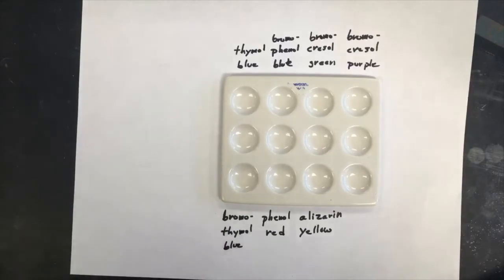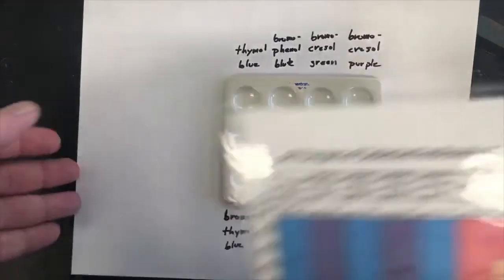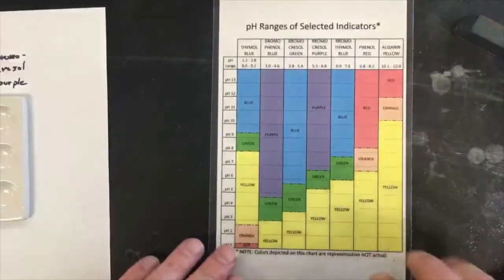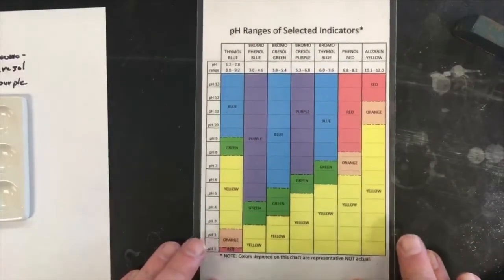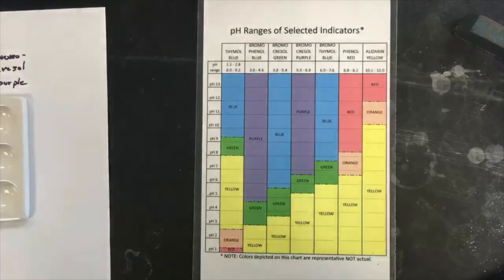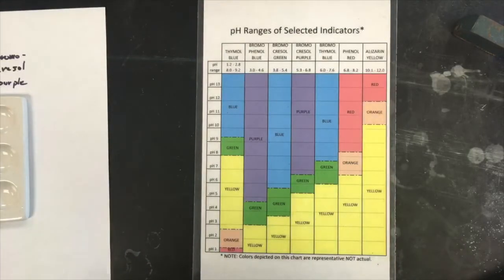Oh first off I should show you, in case there's a, here's a, this might be helpful. Here is a colored chart of the indicator table in your lab manual. So this may be helpful as you go along and you might want to refer back to it.